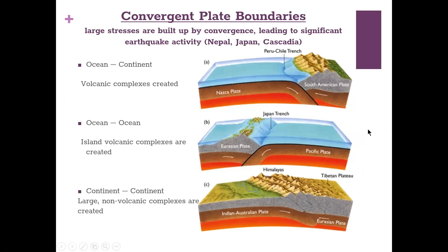Convergent plate boundaries build up large stresses leading to significant earthquake activity, such as in Nepal, Japan, and Cascadia in the Pacific Northwest. There are three types: ocean-to-continent convergence creates volcanic complexes — this is what occurred long ago in California, creating the Sierra Nevadas. Ocean-to-ocean convergence creates island volcanic complexes, which is what created Japan. Continent-to-continent convergence creates non-volcanic mountain complexes — that's how we get the Himalayas, where the Indian-Australian plate moves north and rams into the Eurasian plate.